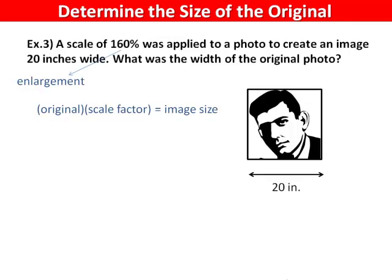Remember from the last example that the image size was a result of multiplying the original size by the scale factor. We know the scale factor and the image size. To solve for the original, we need to divide by one decimal six to isolate that question mark. Twenty divided by one decimal six is twelve point five, so the width of the original photo was twelve point five inches.